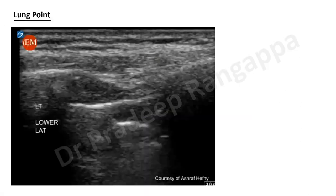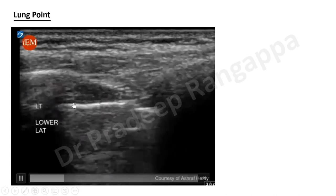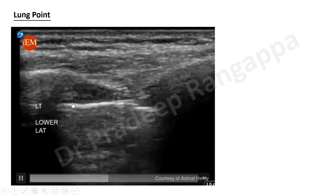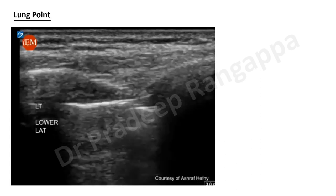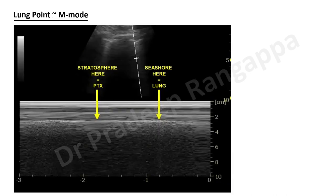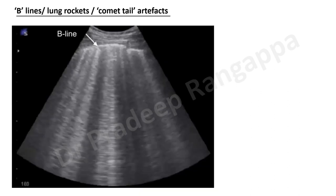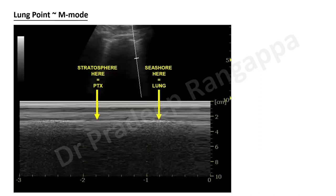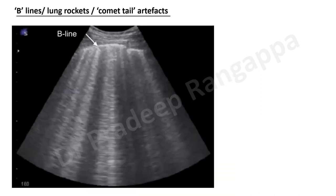There is also something called the lung point. In this video you can see lung sliding in one area and no sliding in another — this transition from normal lung to pneumothorax air pocket is the lung point. On M-mode, you see alternating seashore and stratosphere appearances. A large pneumothorax shows a uniformly stratosphere sign, but a lung point with alternating patterns indicates a small or partial pneumothorax.